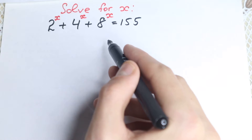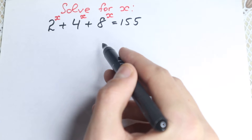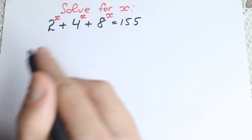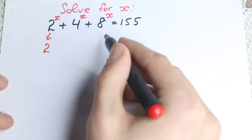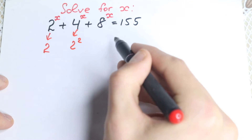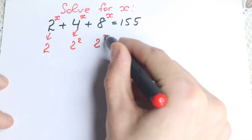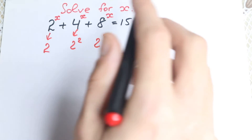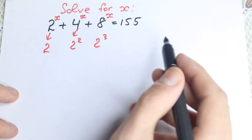First of all, we have all different bases, and it would be really great for us to create the same base. We know that 2 can be written as 2, this 4 can be written as 2 squared, and this 8 can be written as 2 cubed. This is the first and really important step for us.